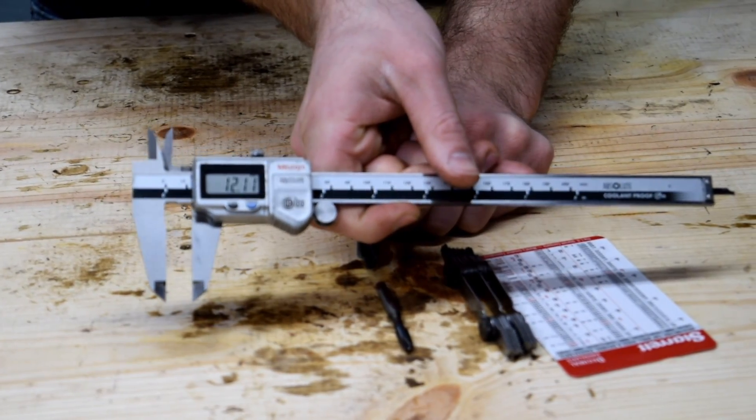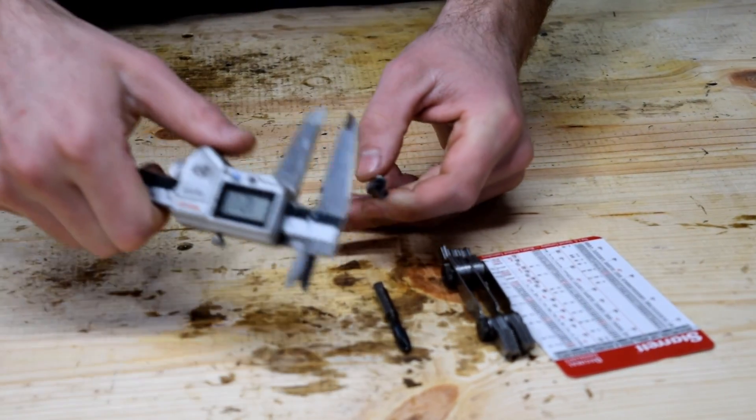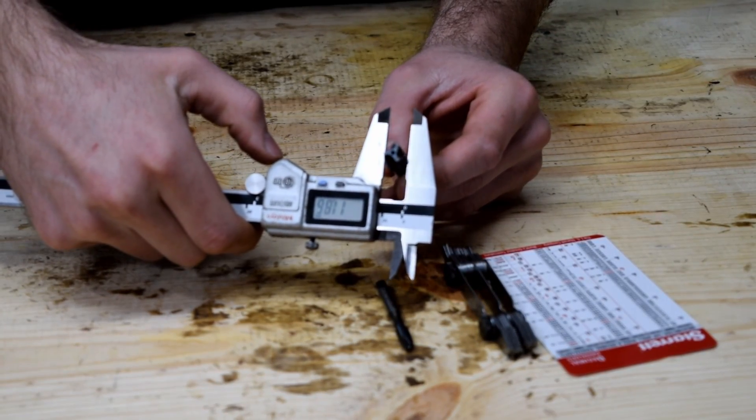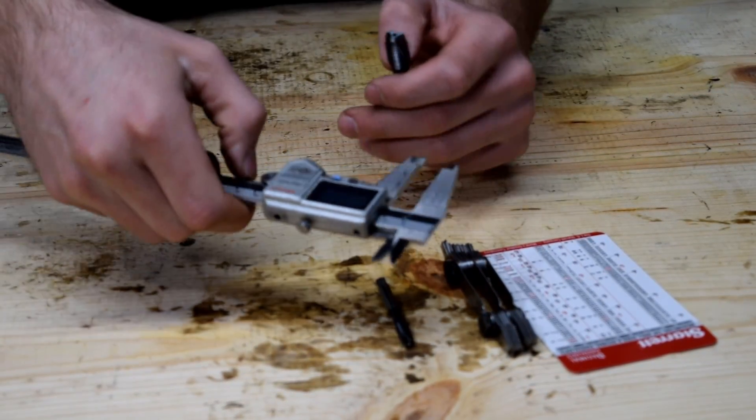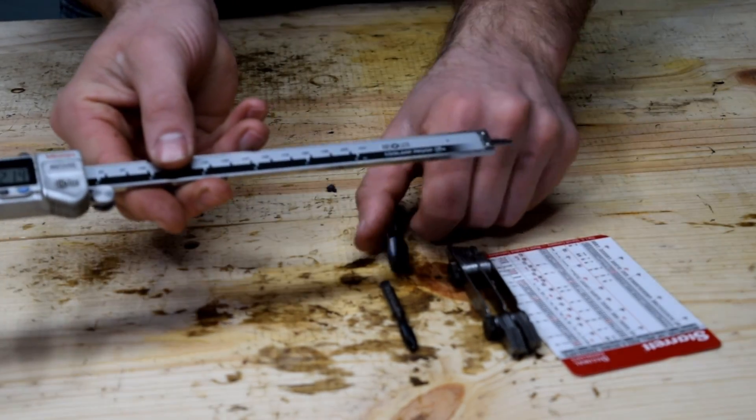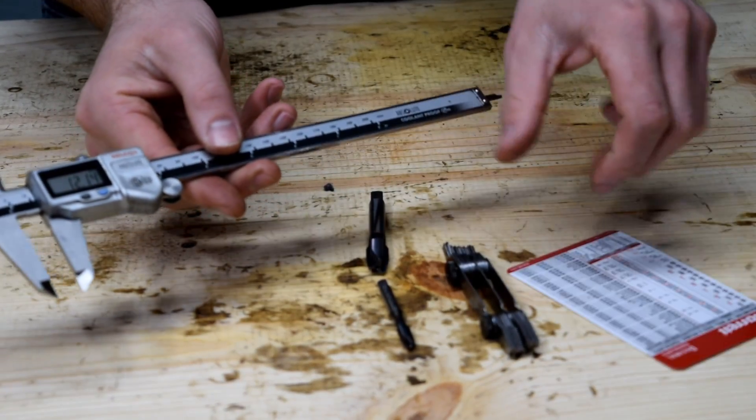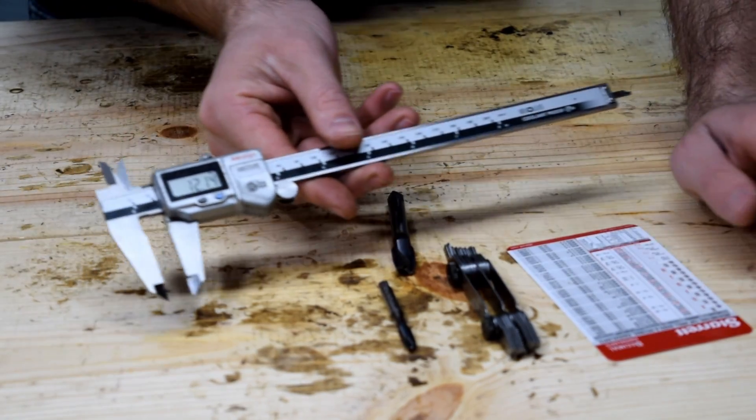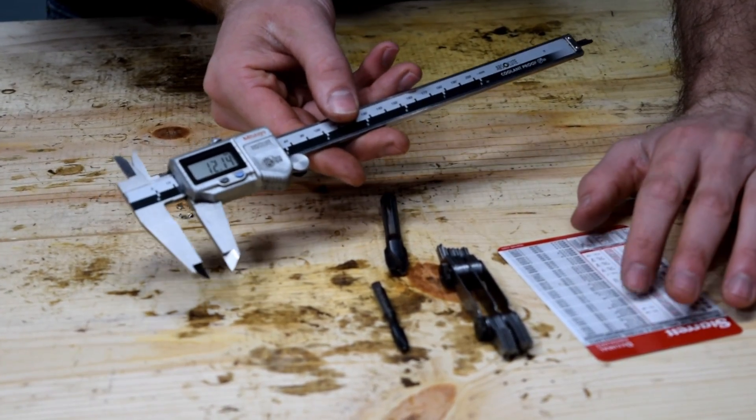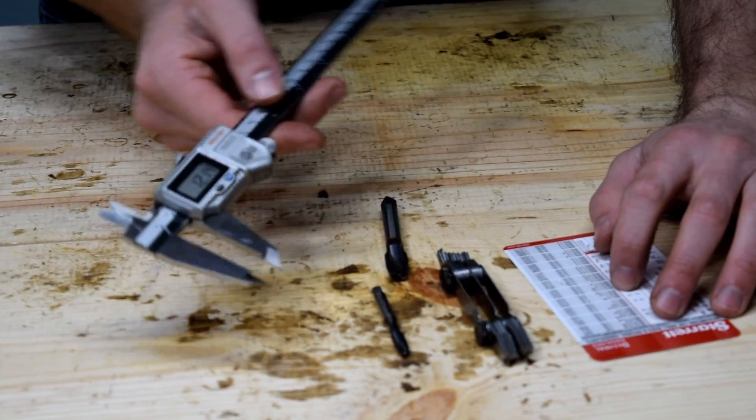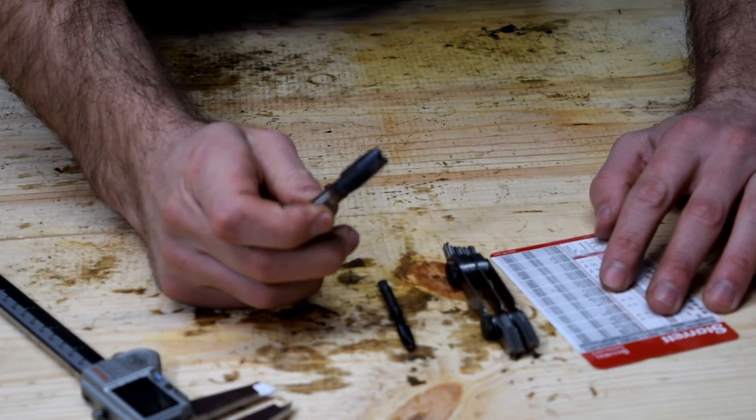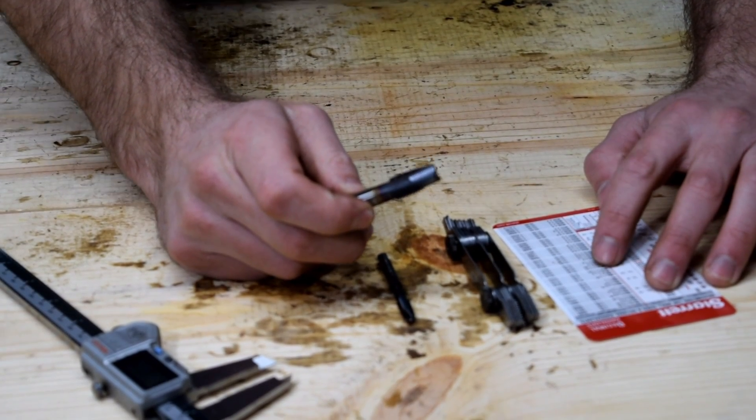I'll switch over to my metric side. It says 12. Give it a little spin, get the high side. It's 12.14. 0.14 ain't that much bigger. It probably is bigger because it's a tap, so it's cutting it. So we've got 12 millimeter, so it's either 1.75 or 1.25.